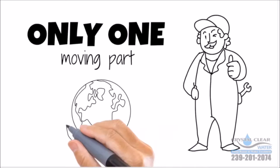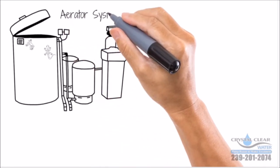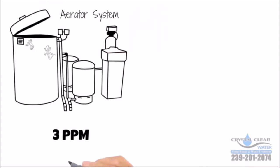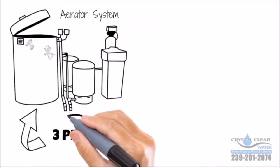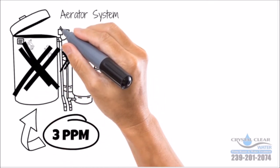Mother nature is free, chemicals are expensive. This aerator system will only remove three parts per million of sulfur and use a lot more electricity due to the extra pump, and a lot more parts to go bad, a lot more to maintain. Not to mention, it's an open system and anything can get inside.